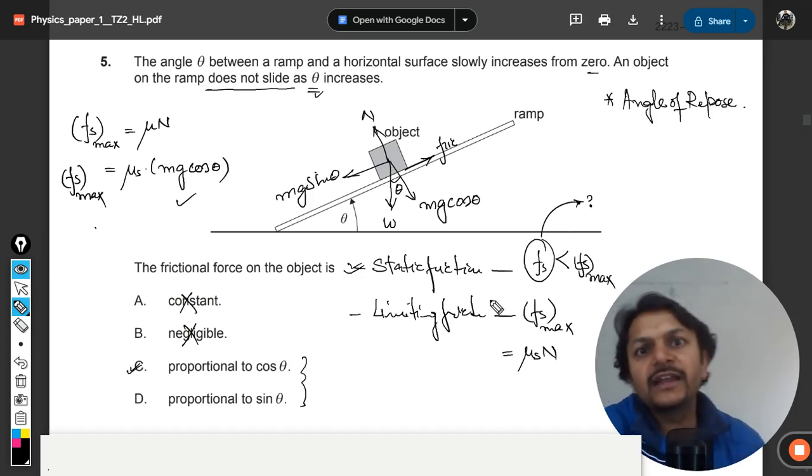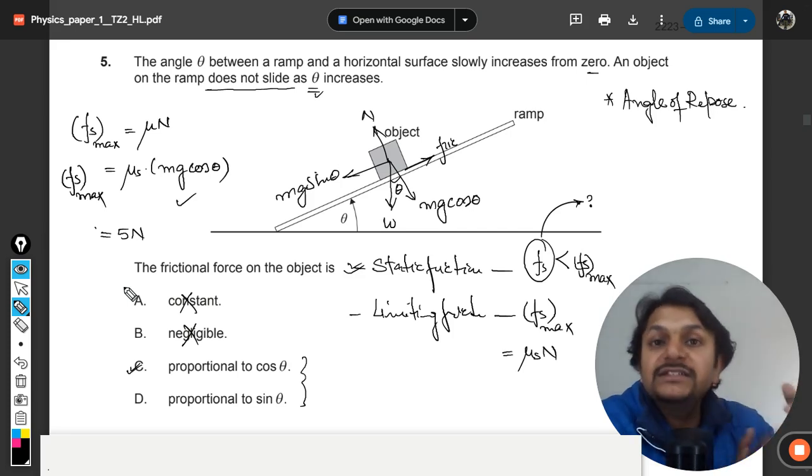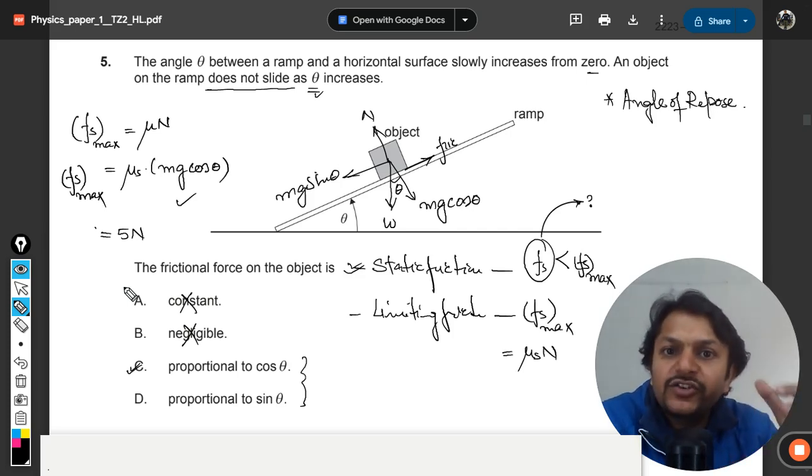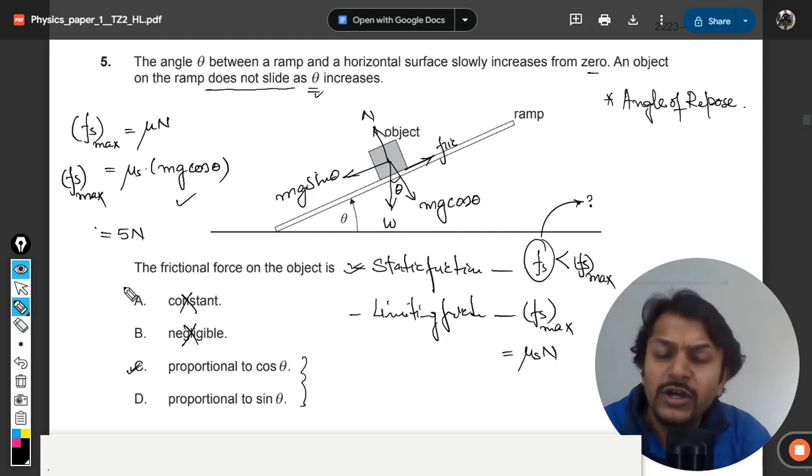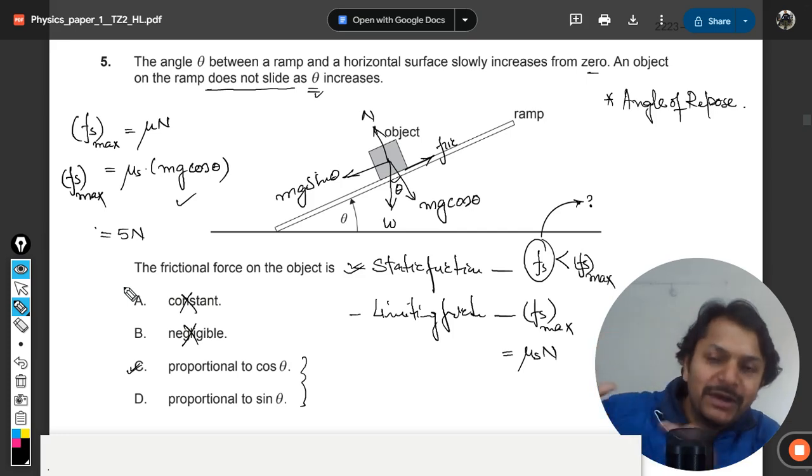There is no formula for that like this formula. Let us say this formula is giving you the value of 5 newton, it means that maximum possible value of friction is 5. But what is the friction between body and the surface? Between body and the surface now, it could have any value, 1 newton, 2 newton, 3 newton, it could have any value but it will be lesser than 5. But what value will it be, we don't know.